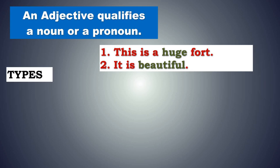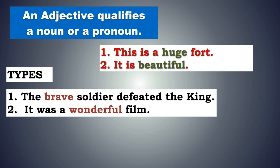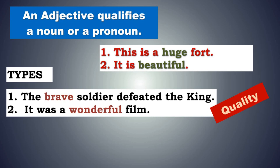Now let us move on to learn about the types of adjectives. Look at these two sentences: The brave soldier defeated the king. It was a wonderful film. The word brave is telling you what kind of soldier defeated the king. Wonderful tells us what kind of film. These words are telling us about the quality of something — mainly a noun or pronoun. Such words are adjectives of quality and they answer the question what kind of or which.